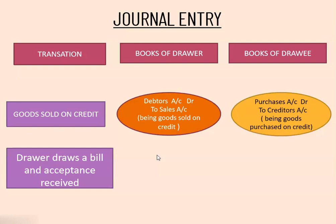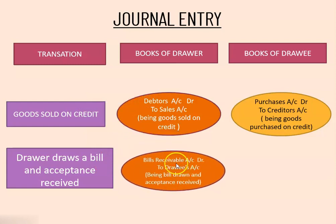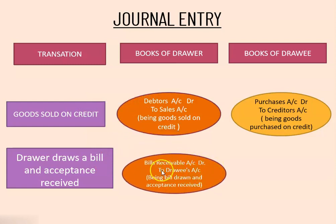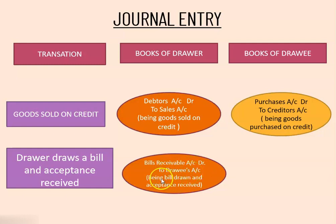After selling the goods on credit basis, the drawer draws the bill and acceptance is received. The journal entry is: bills receivable account debited to drawee's account — being bill drawn and acceptance received. The drawer receives the bill and therefore bills receivable account is debited to drawee's account.